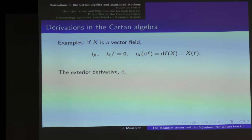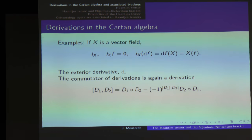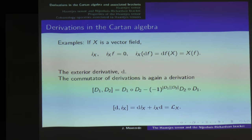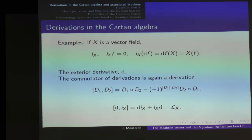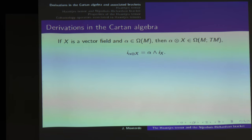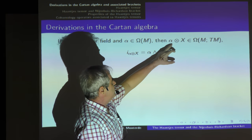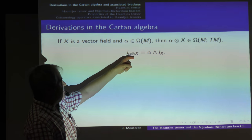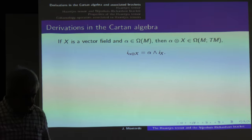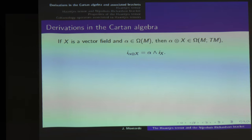Another example is the classical exterior derivative. To build more derivations, one uses the commutator of derivations — the graded commutator — and in particular the commutator of the exterior derivative and the insertion operator with respect to a vector field, which gives the Lie derivative. This is the well-known Cartan formula. Even more, when we multiply a differential form by a vector field we get a vector-valued differential form, and the insertion operator with respect to this decomposable vector-valued form is just the product of the form and the insertion operator.